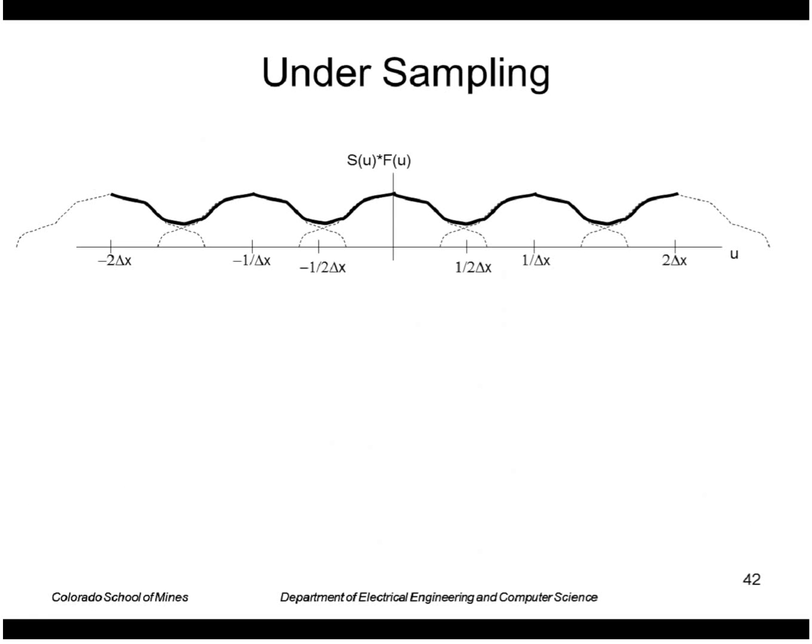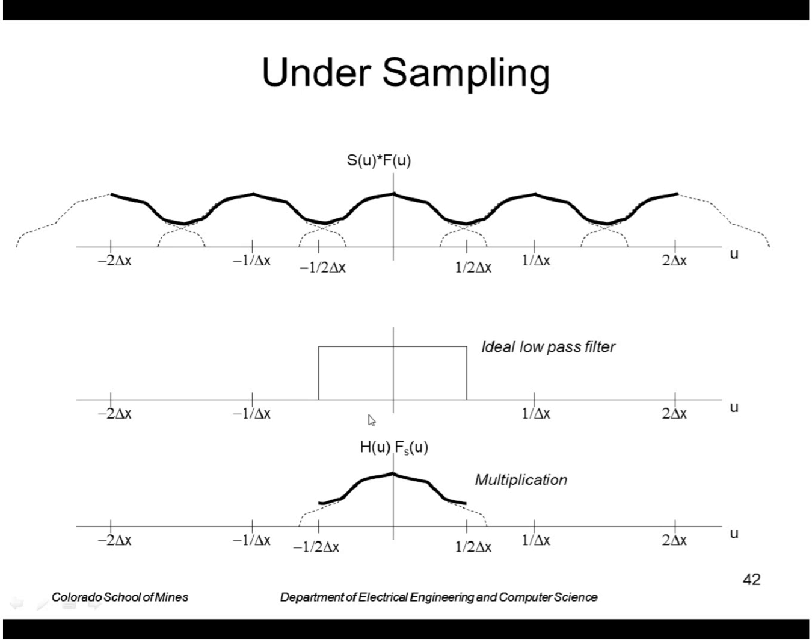That's a problem because when we try to reconstruct it by multiplying by the ideal low-pass filter, we don't get back the original. In this area where they overlapped we get back an additional portion that's not accurate.